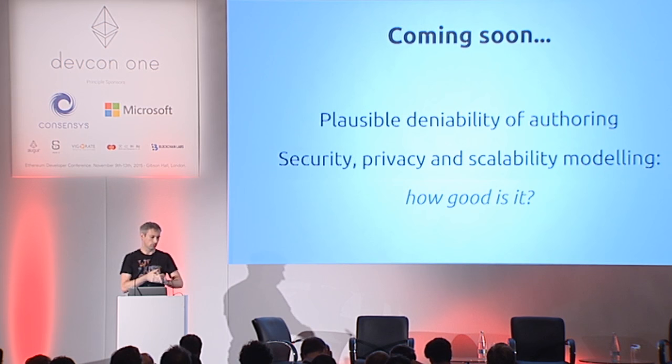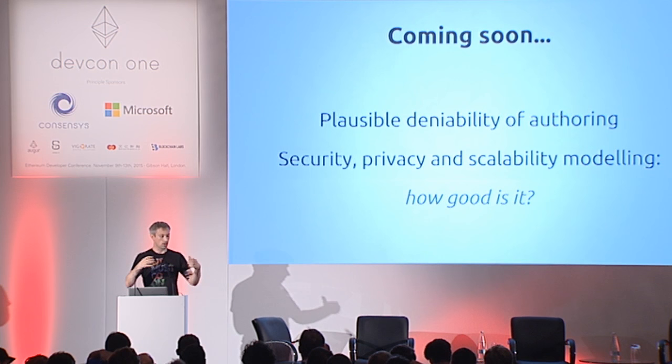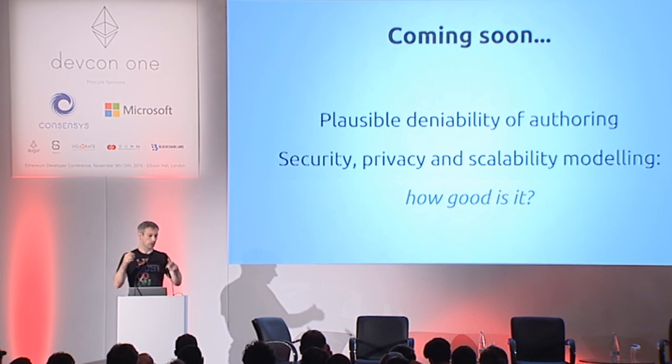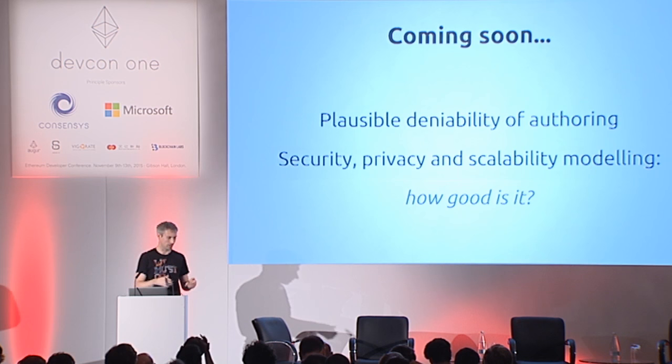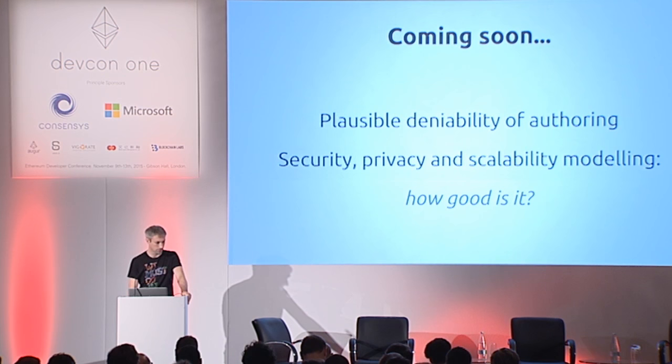In terms of where the protocol is going: plausible deniability of authoring — giving future observers no ability to determine it was us who sent a message, while at the time there is cryptographic certainty. Also modeling precisely how scalable this approach is and what the trade-off will be between efficiency and privacy.